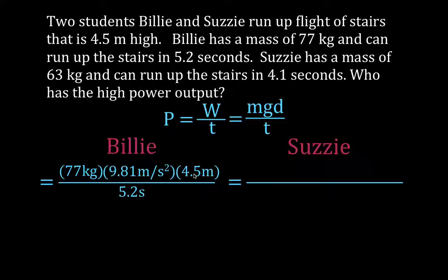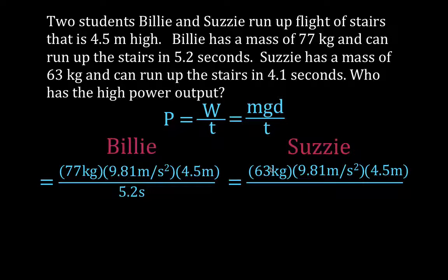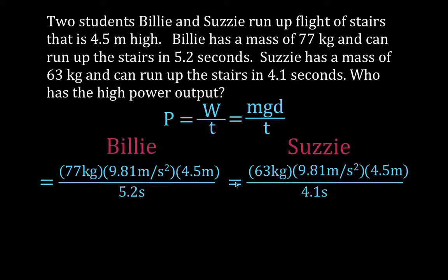For Susie, we take her mass of 63 kilograms and also multiply that by the acceleration due to gravity to get the force she has to apply to lift her body up over the same distance. We divide both of those by the time, giving us the work that Billy does divided by his time, and the work that Susie does divided by her time.